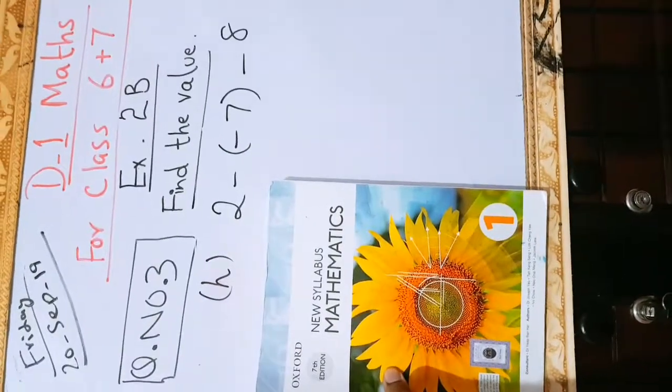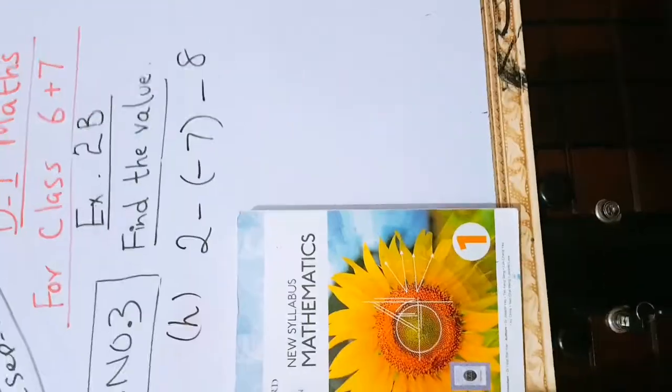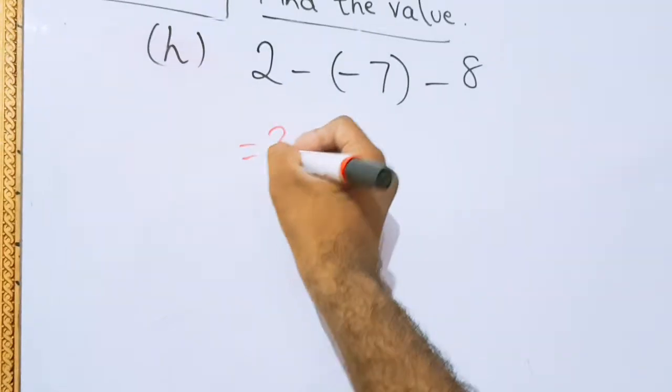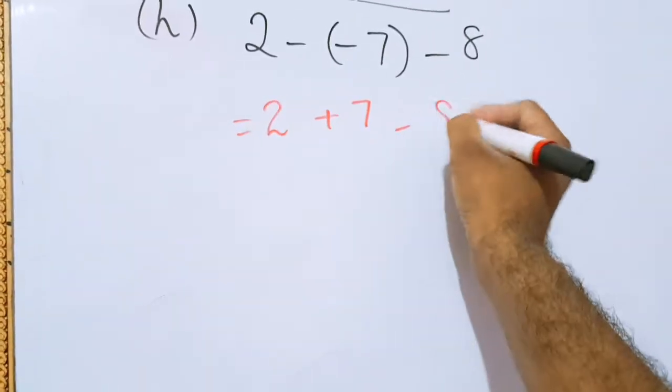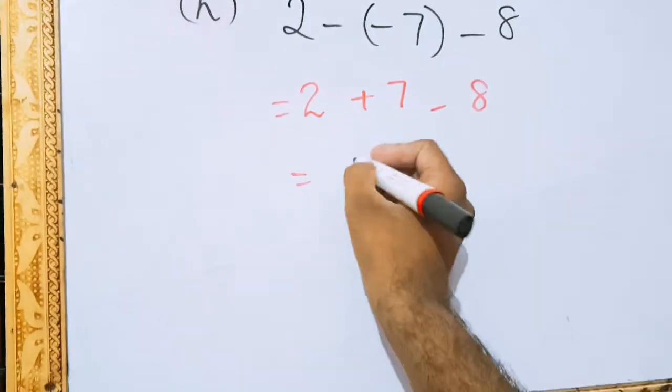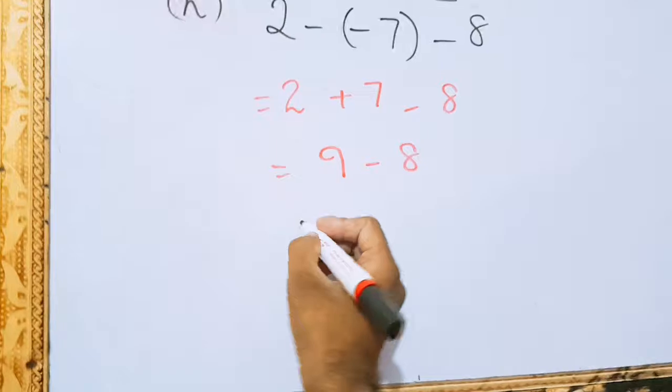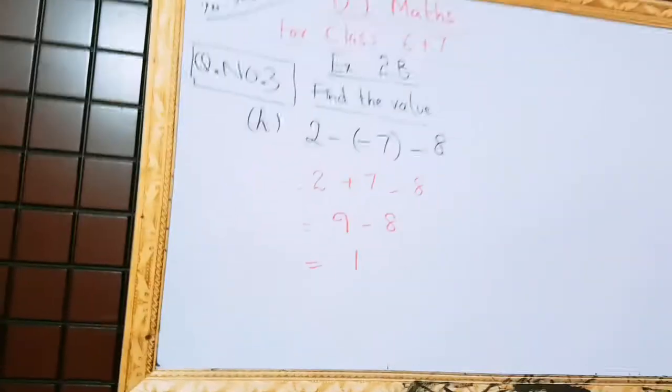Now I have written H part in front of you. Let's do it quickly. 2 will be written as it is, minus minus plus 7. So minus 8 will be brought down as it is. 2 plus 7 will be 9. Minus 8 will be equal to 1.